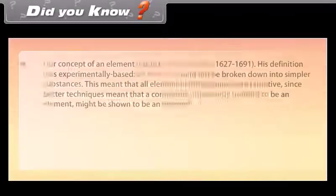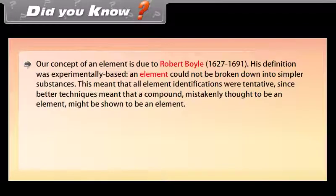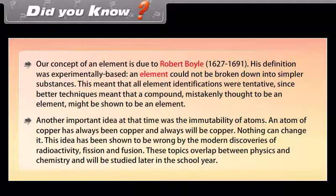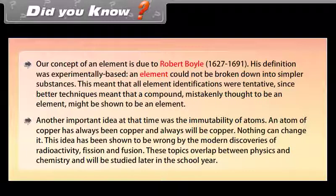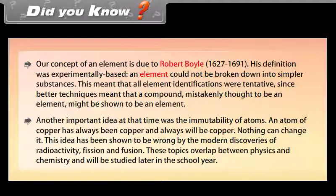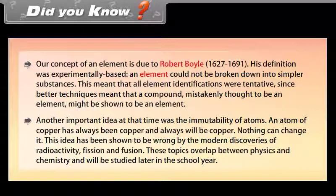Did you know? Our concept of an element is due to Robert Boyle (1627-1691). His definition was experimentally based: an element could not be broken down into simpler substances. This meant that all element identifications were tentative, since better techniques meant that a compound mistakenly thought to be an element might be shown to be an element. Another important idea at that time was the immutability of atoms. An atom of copper has always been copper and always will be copper. Nothing can change that. This idea has been shown to be wrong by the modern discoveries of radioactivity, fission, and fusion. These topics overlap between physics and chemistry and will be studied later in the school year.